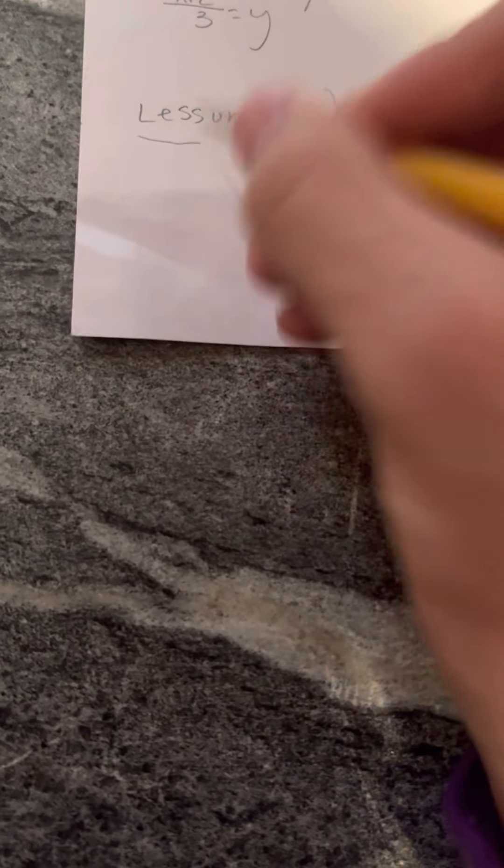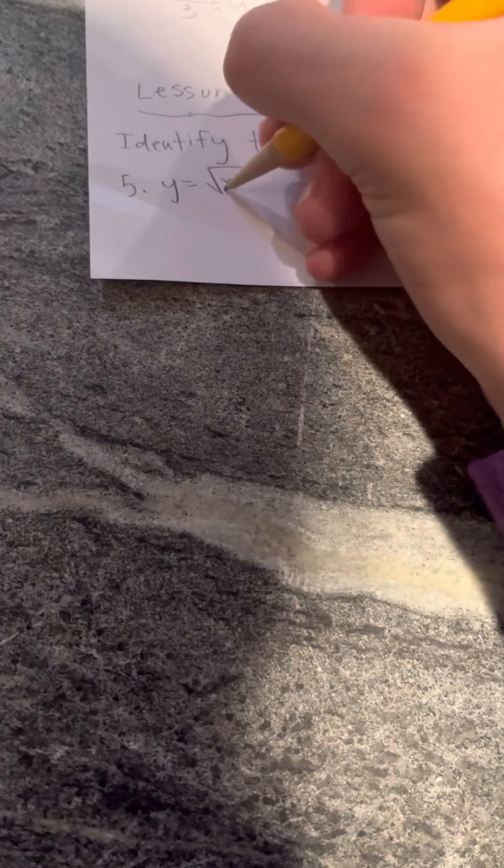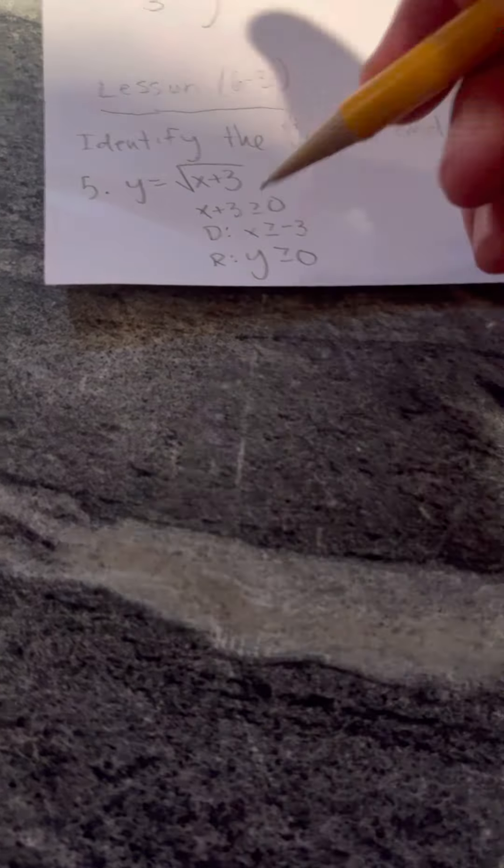Let's move on to lesson 6-3. Identify the domain and range. Problem number 5: y equals the square root of (x plus 3). We set x plus 3 greater than or equal to 0, then subtract 3 from both sides, so x is greater than or equal to negative 3. That's the domain. The range is y is greater than or equal to 0.